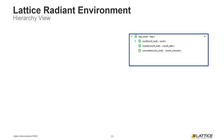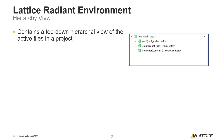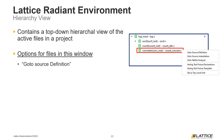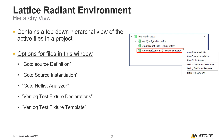The bottom-most section of the File List tab is the project hierarchy view. This window contains a top-down hierarchical view of all the active design files in a project and is automatically updated whenever a project is saved. Each file in this window can be right-clicked to open a drop-down with several useful options. The Go to Source Definition option opens the selected file in Radiant's text editor. Go to Source Instantiation opens the file that instantiates the selected module, with the instantiation line selected. The Go to Netlist Analyzer option opens Radiant's Netlist Analyzer tool and only appears if LSE is the active synthesis tool. The Verilog Test Fixture Declarations and Verilog Test Fixture Template options simplify the process for creating test benches. Finally, Set as Top Level Unit and Unset as Top Level Unit can be used to manage the hierarchy of a project.